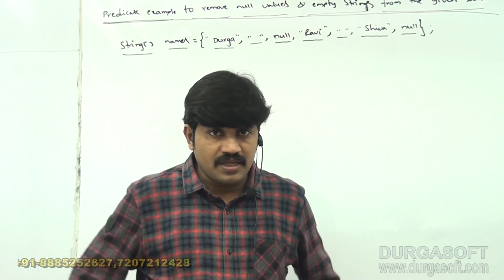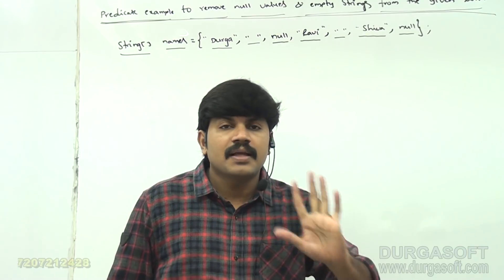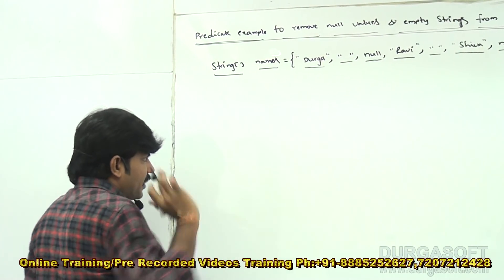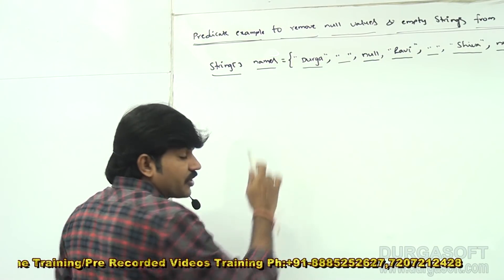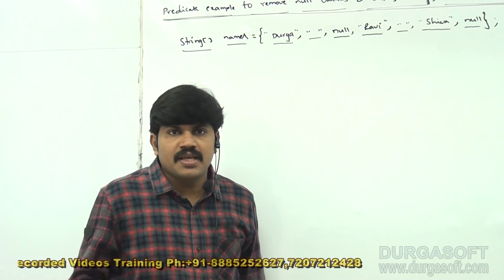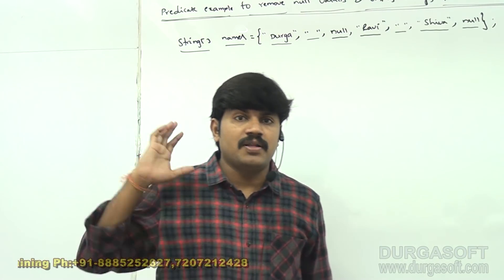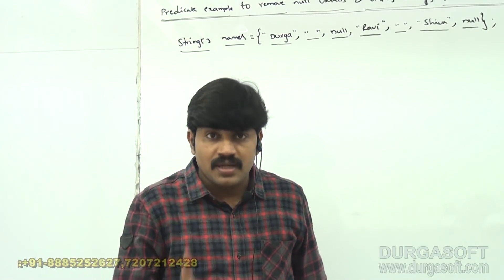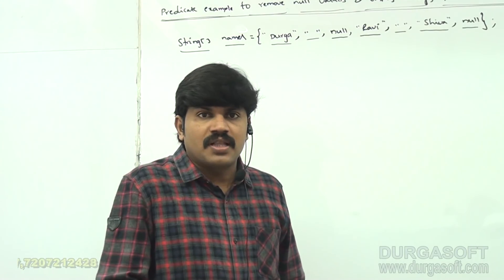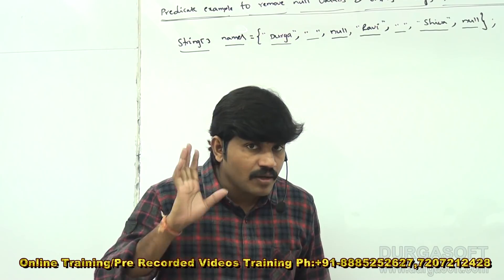We can prevent NullPointerException this way. For this requirement — to remove null values and empty strings — I want to show how to use Predicate. I want to write a Predicate that always takes a String as argument. That predicate will check whether the string is an empty string or a null value. If it is empty or null, it returns false. My string should not be null and its length should not be zero.